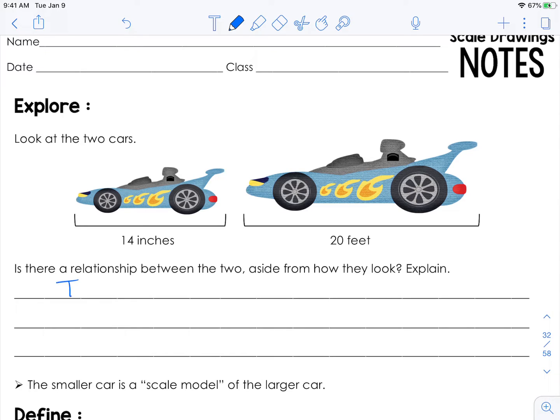I'm going to write that here. And that just means that the smaller car is a scale model of the larger car. And you should be able to look at two figures or two objects and even without measurements be able to identify whether or not one appears to be a scale model of the other one.